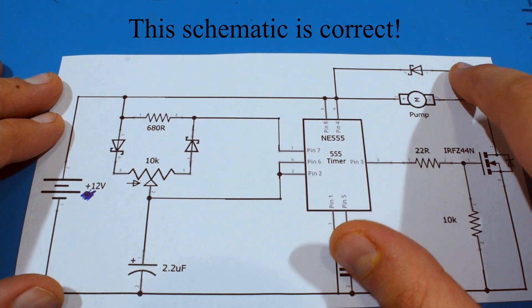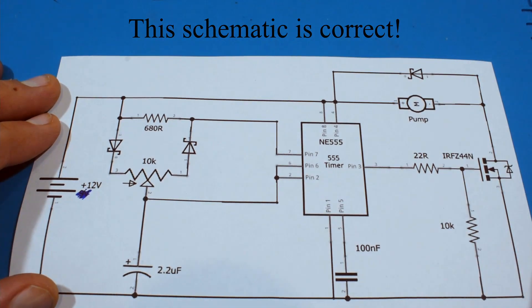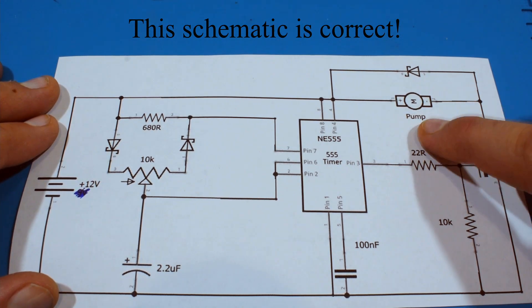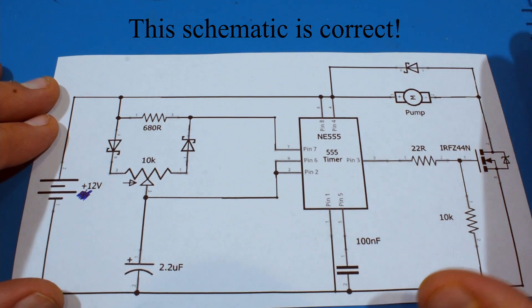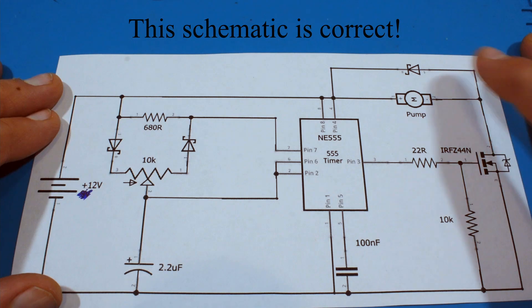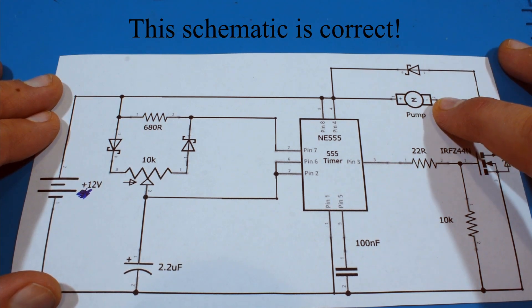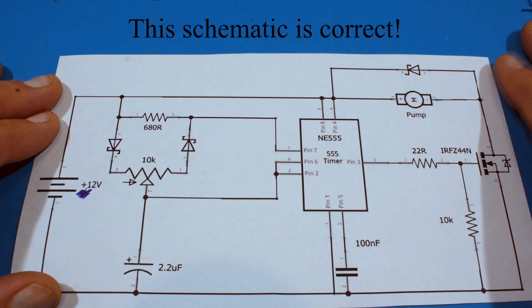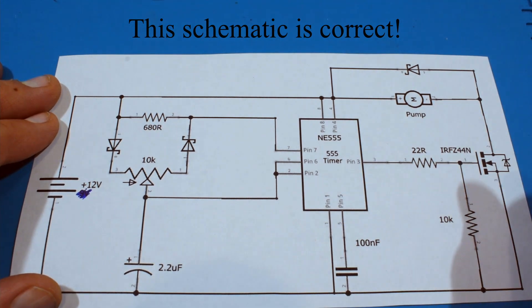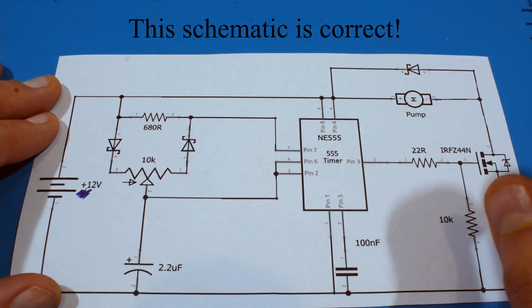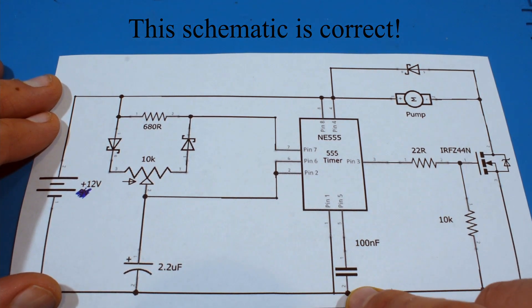So this time it's good. And this time I added a flyback diode because a motor, it says a pump here because it was supposed to control a peristaltic pump, the motor is an inductive load. And if you know anything about inductors, they store energy in a magnetic field. And unlike capacitors, capacitors don't like the voltage changes.